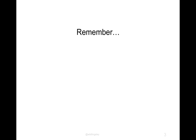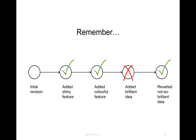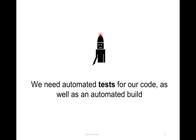We've got the initial revision, we added a shiny feature, a colourful feature, then a brilliant idea, and then we needed to revert that not-so-brilliant idea. Ideally, if the brilliant idea broke the tests, it wouldn't have got pushed in the first place — I would have known the tests weren't passing, the code was broken, and so I wouldn't have committed that version. How could I have known that the fourth commit broke everything before I committed it? We need automated tests for our code as well as an automated build.